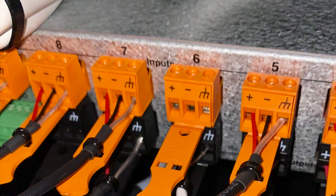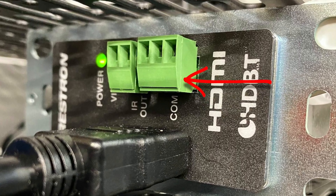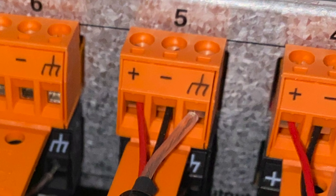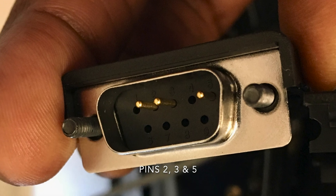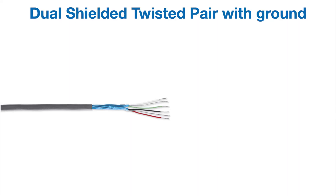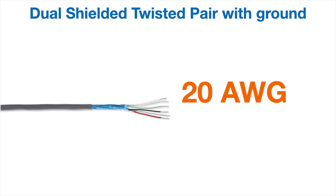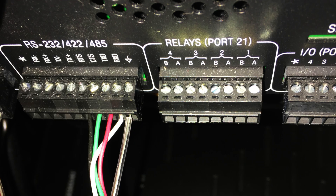Shielded twisted pair with ground wire is used for audio and control signals. It's usually terminated to an input-output phoenix block or a DB9 connector, or it gets soldered to a TRS audio connector. Dual shielded twisted pair with individual ground wires is usually used for audio and control signals, and connections are usually terminated to an input-output phoenix block, star quad XLR, or a DB9 connector.